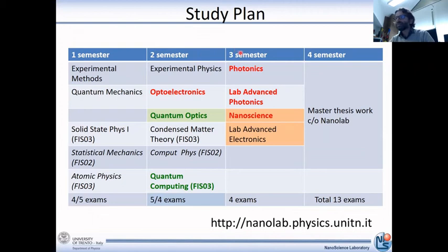Then, in the third semester, you will have photonics, laboratory of advanced electronics, and nanoscience. If you are less interested in advanced electronics or material science, you can select any course that you are interested in instead of nanoscience or laboratory of advanced electronics. So those are the elective courses that you can select based on your own personal interest.